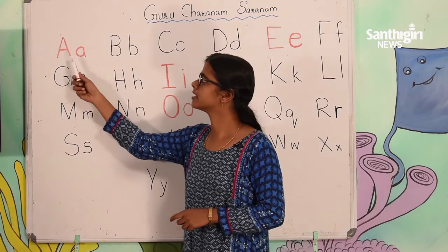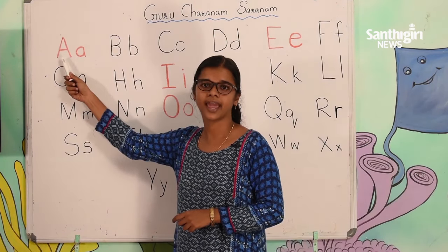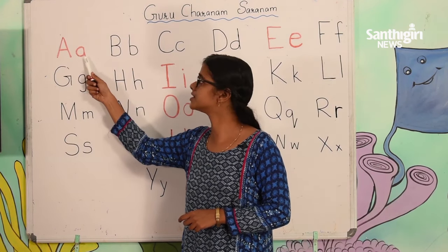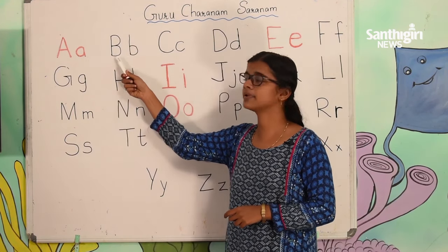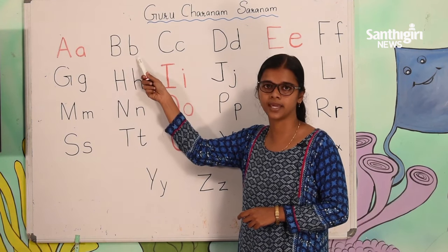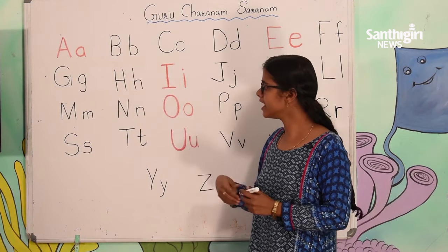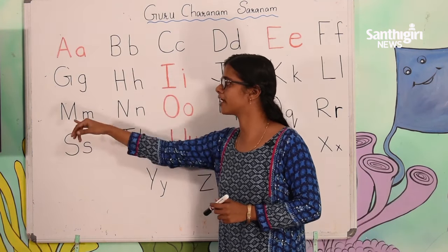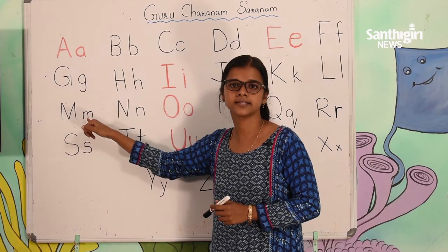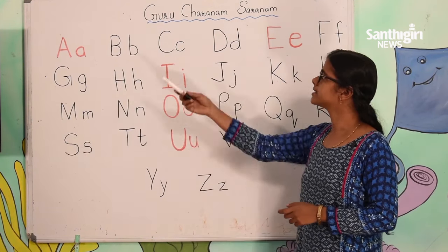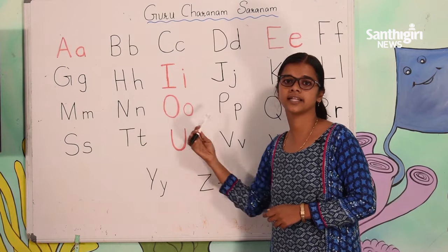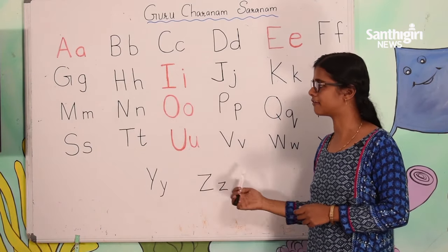See for example, this is capital letter A and this is small letter A. This is capital letter B and this is small letter B. For each alphabet, you can find a capital letter and a small letter. Now let's go over all 26 of the letters in the English alphabet. Let's read.